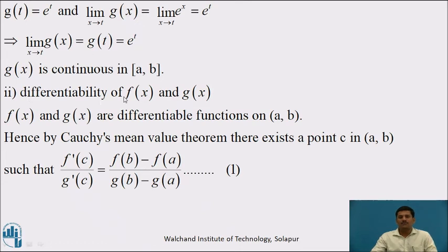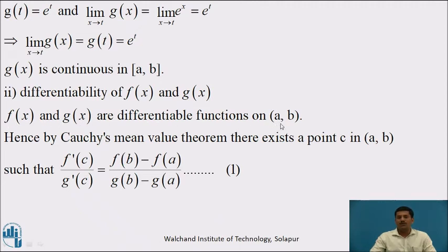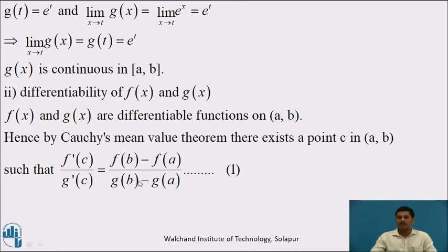Second: differentiability of f(x) = sin x and g(x) = e^x. We just discussed that sin x and e^x are differentiable on ℝ. Therefore f(x) and g(x) are differentiable on (a, b), since this interval is a subset of ℝ. Therefore both conditions of Cauchy's mean value theorem are verified. Hence there exists a point c in (a, b) such that f'(c) / g'(c) = [f(b) - f(a)] / [g(b) - g(a)]. Call this equation 1.